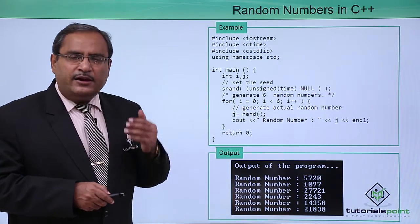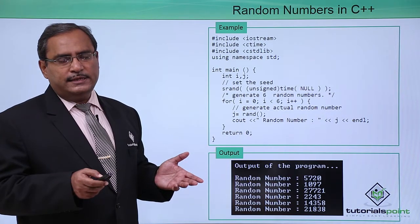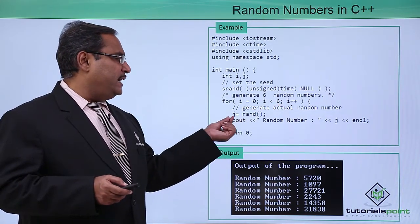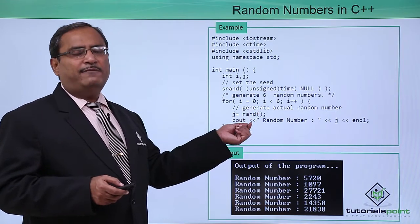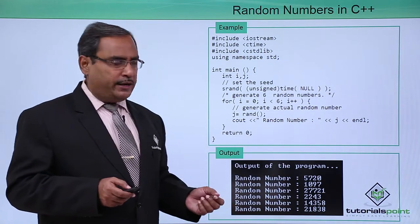I shall generate six random numbers using this for loop which is ranging from i equals 0 to i equals 5. j equals rand. The rand function will generate the arbitrary random number and then j is getting printed.